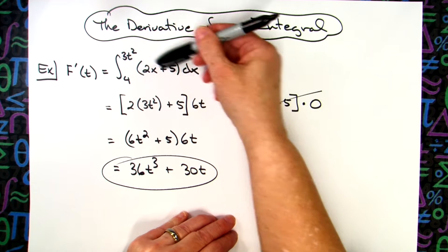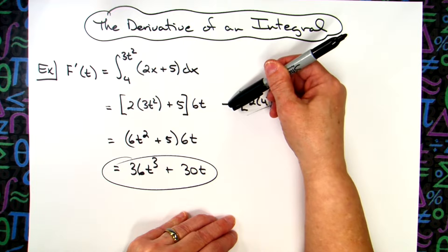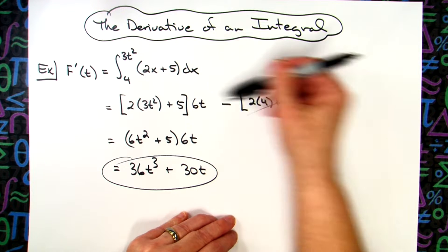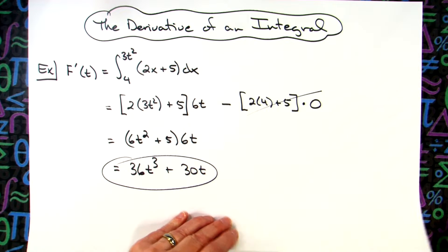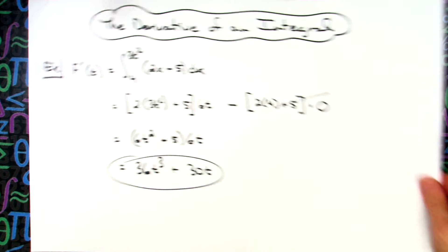You take the upper limit, plug it into the function, multiply it times the derivative, and then subtract, plug in the lower limit, multiply it times the derivative of that lower limit. Now, that's not the only way that a question can look.